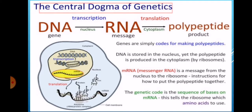The central dogma of genetics. In this slide, you can see the RNA which is produced from DNA by transcription and protein which is produced from RNA or messenger RNA by translation. Genes are simply codes for making polypeptides. DNA is stored in the nucleus, yet the polypeptide is produced in the cytoplasm by ribosomes. Messenger RNA is a message from the nucleus to the ribosome, instructions for how to put the polypeptide together. The genetic code is the sequence of bases on mRNA. This tells the ribosome which amino acids to use.